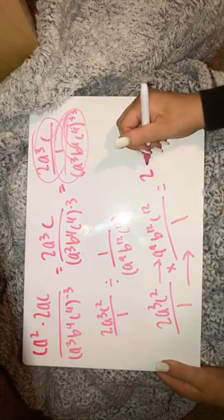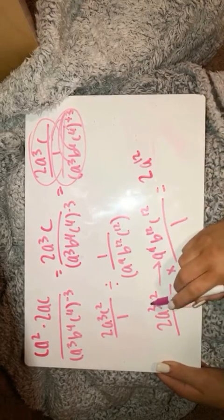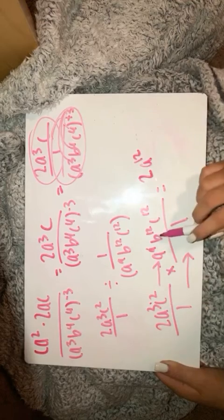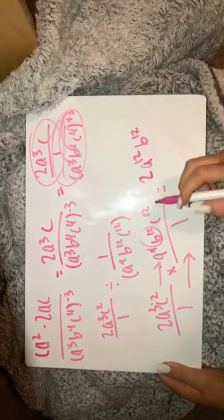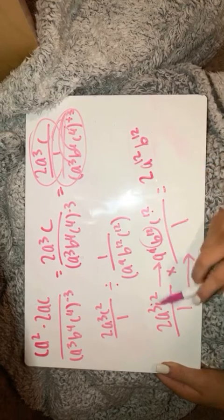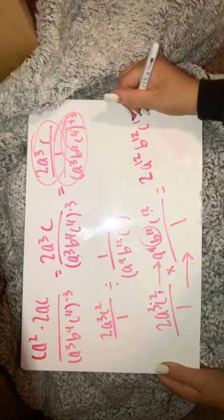And then you're going to end up with a to the 12th because you're going to take this 9 plus 3, which is 12. And then there is no b over here, so you're just going to have this single b to the 12th. And then this c12 plus c squared would give you c to the 14th.